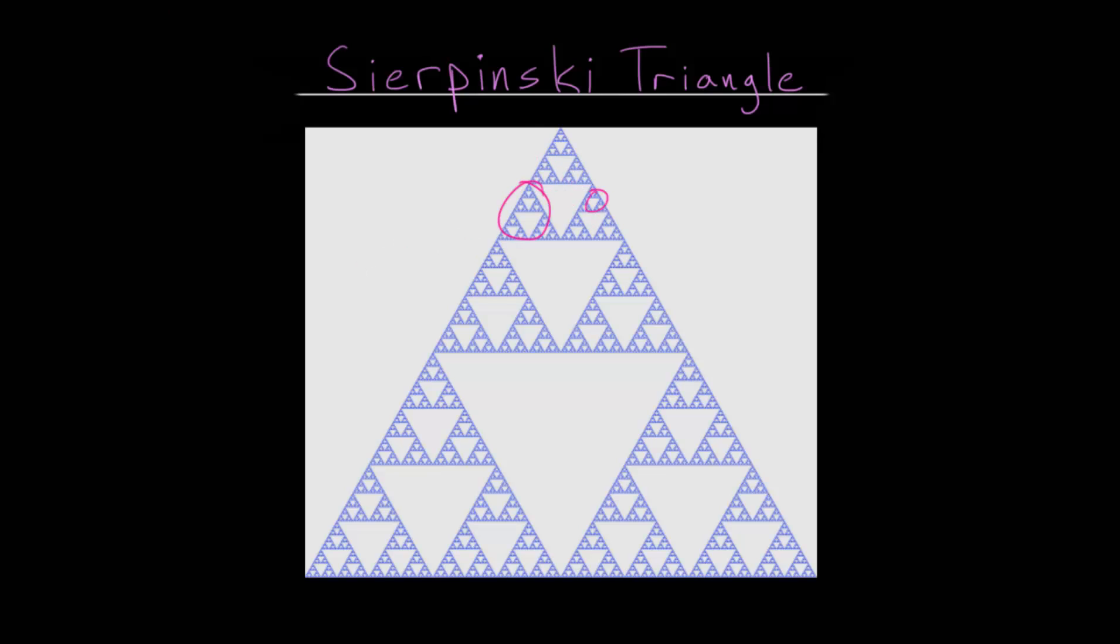This triangle is formed by usually starting with an equilateral triangle and then splitting each of the sides in half. These are all the midpoints of the sides.